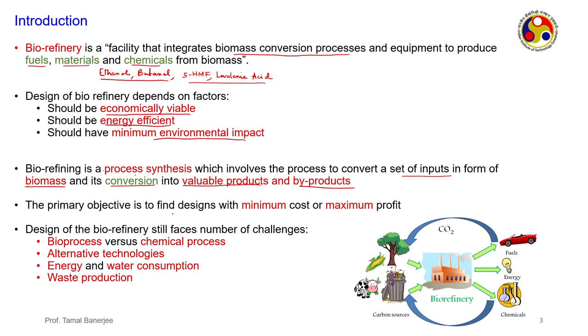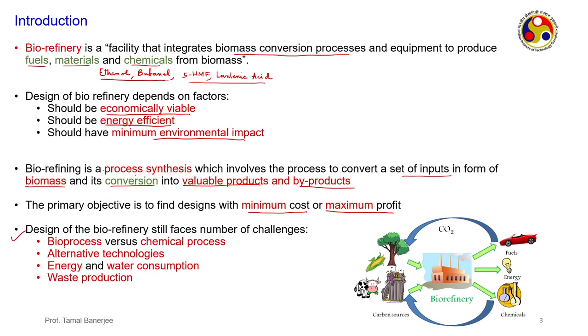The primary objective of any biorefinery is to find a design with minimum cost or maximum profit. There are numerous techniques available — biological or thermochemical — and within each you can choose different temperatures, enzymes, or reactor configurations. For example, indirect gasification produces more hydrocarbons depending on what you want. This is the bioprocess versus chemical process decision — whether biological or thermochemical is financially viable.